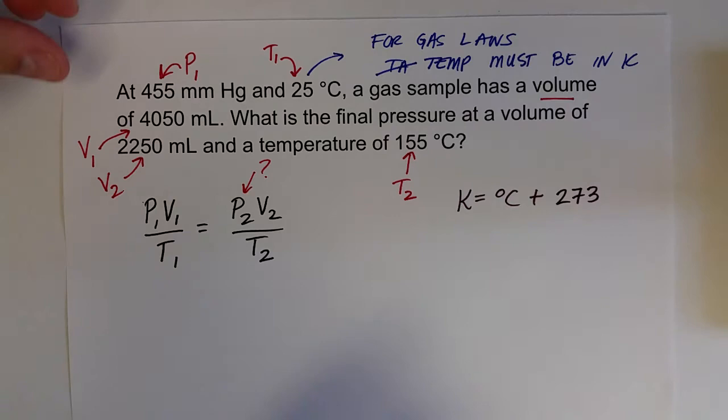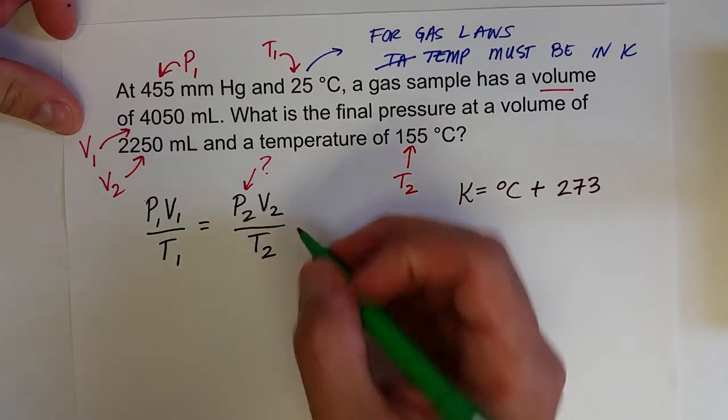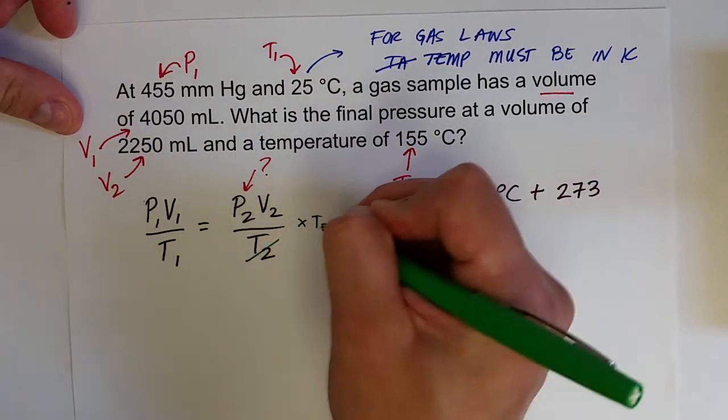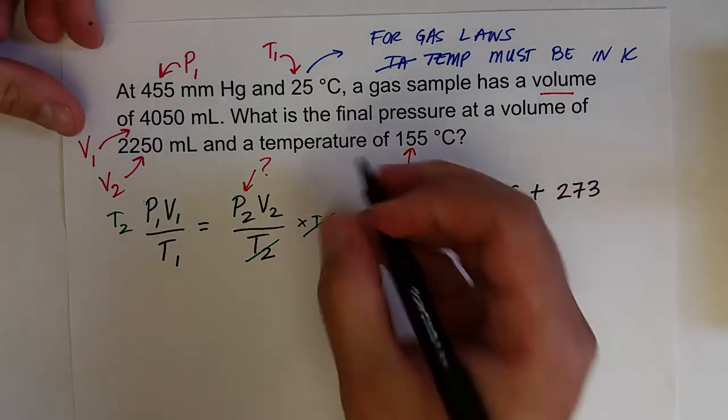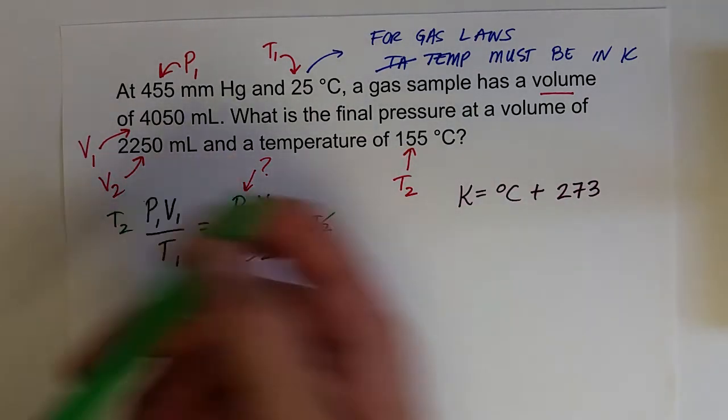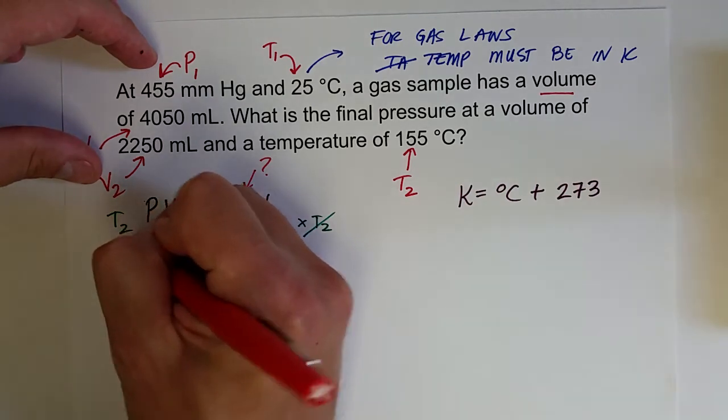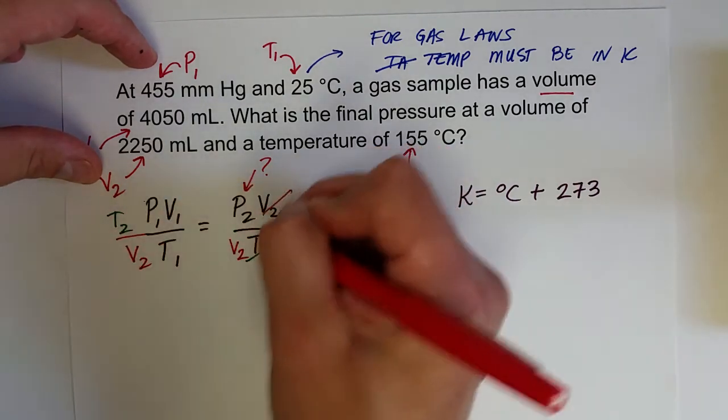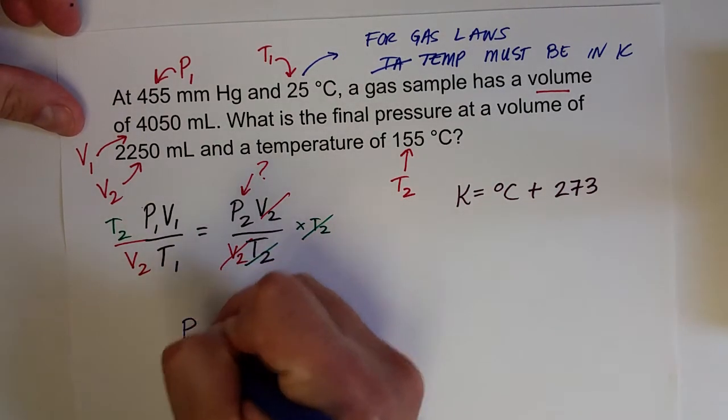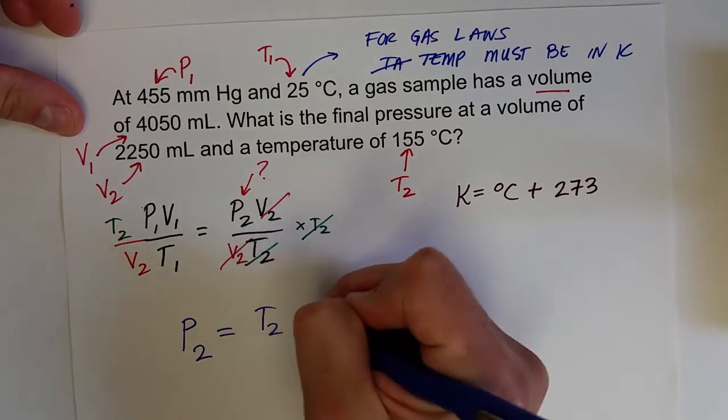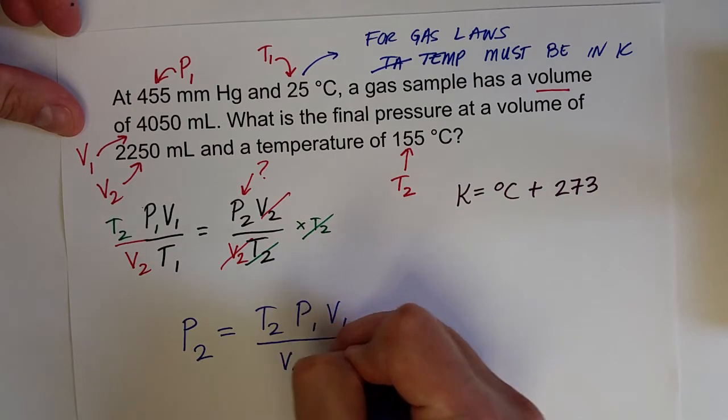So first, let's solve for P2. What we need to do is multiply both sides by T2. I'll cancel it out on this side. Put it on that side, and then divide both sides by V2 to get rid of V2 on the right, so we're left with P2.